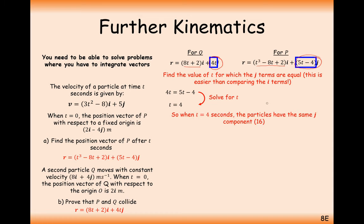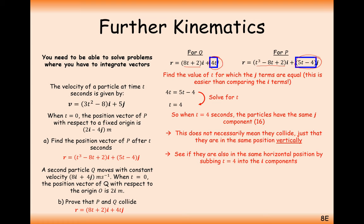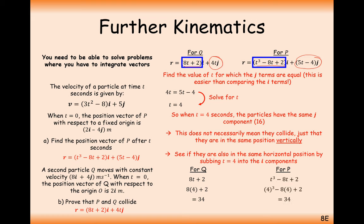Plugging t equals 4 into Q's i component (8t plus 2) gives 34i. Plugging t equals 4 into P's i component also gives 34 — confirming they match. So 34 is the i component and 16 is the j component at intersection. The particles collide after 4 seconds at position vector 34i plus 16j.